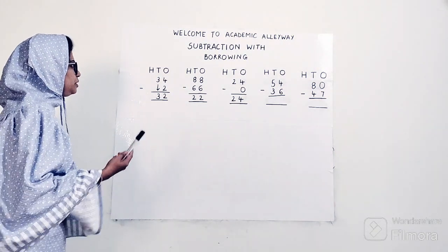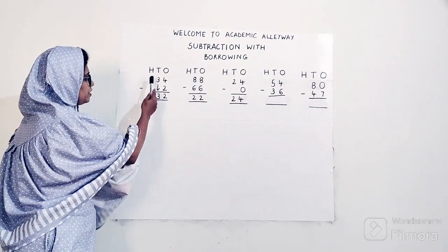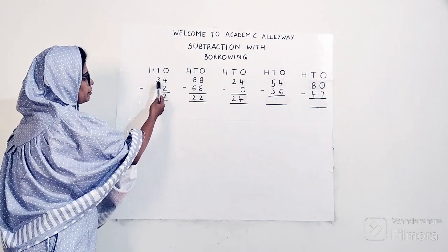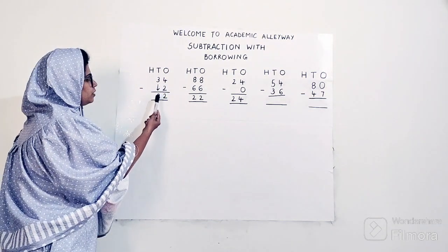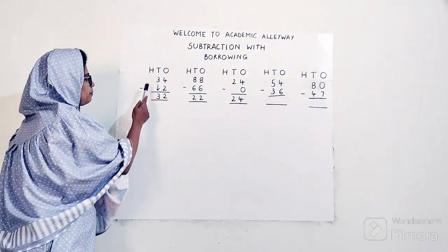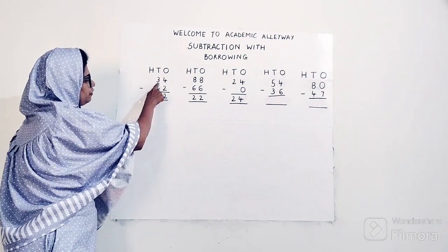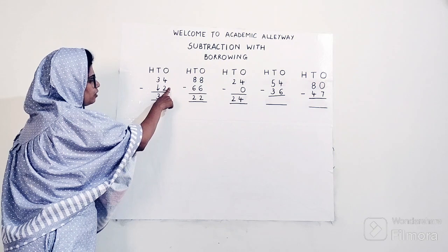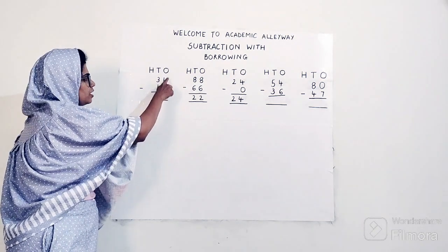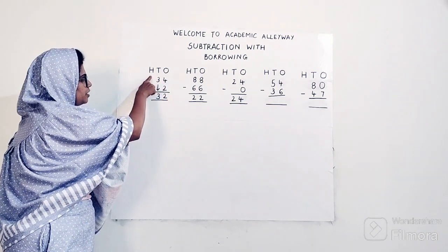Now let's start. Always write HTO — Hundreds, Tens, Ones — because this makes it easier for children to understand which number goes under ones, which number goes under tens, and which number goes under hundreds. Starting with the first example: I've written HTO, and my first example is 34 minus 2.